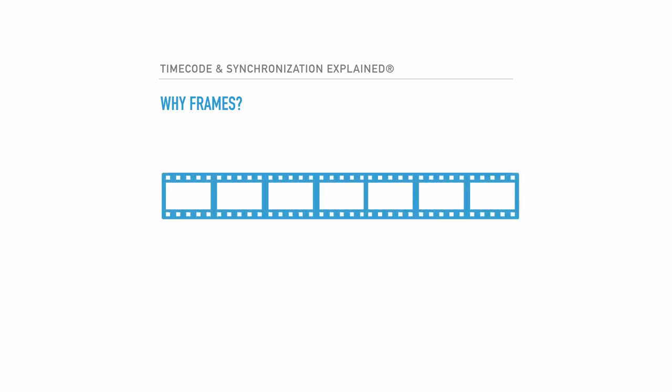To understand why frames are used, it is important to remember that traditional film could only record or display so many physical frames in one second. That number was standardized at 24 frames per second, or FPS, almost 100 years ago in the late 1920s.